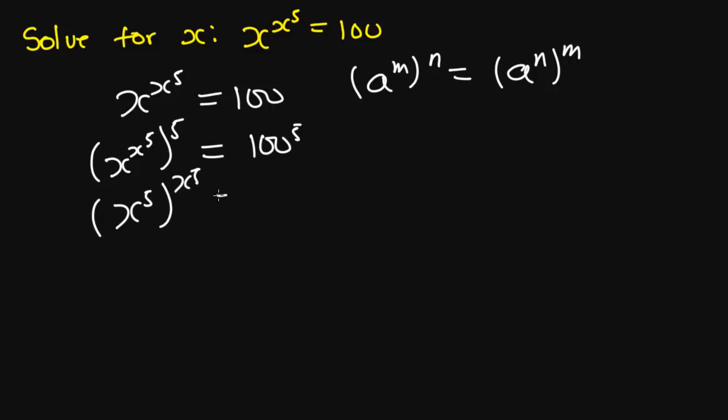So you are going to have x exponent 5 all exponent x exponent 5, and this will be equal to, then we can rewrite 100 as 10 exponent 2 all exponent 5.